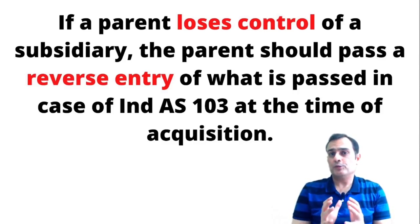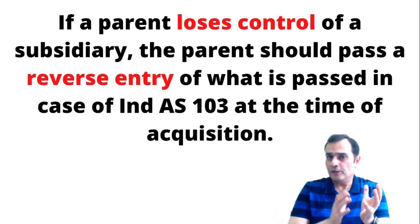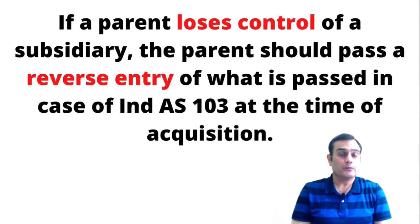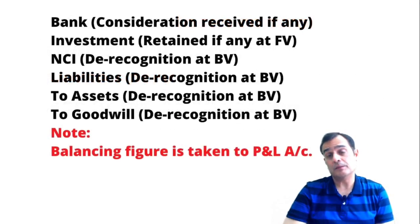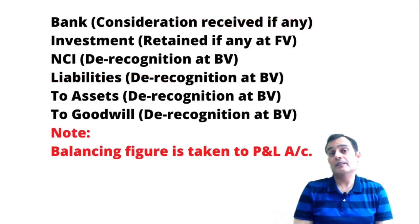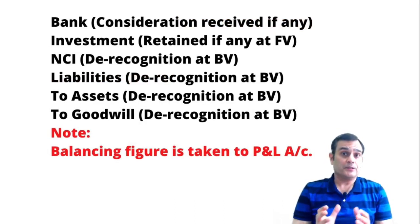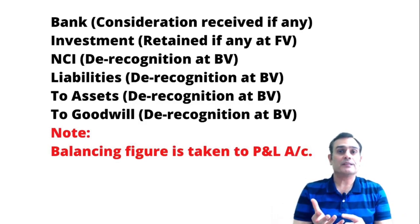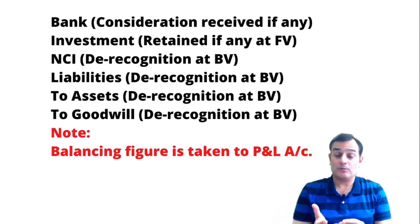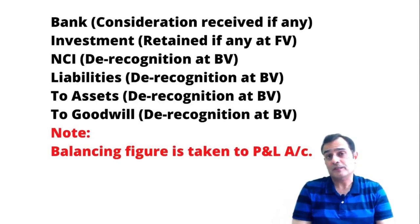So when you are gaining control, you put an acquisition entry. Therefore, when you are losing control, you are supposed to put a reversal entry in terms of Ind AS 103. Remember, this treatment is applicable only in terms of the consolidated financial statements. This single entry fits any combination — whether it is a complete disposal, a partial disposal, or even a deemed disposal.